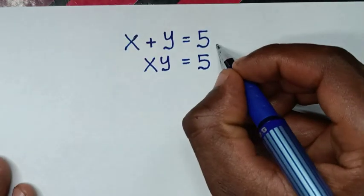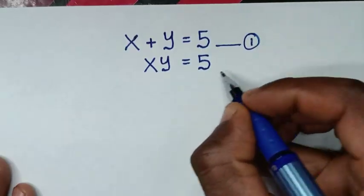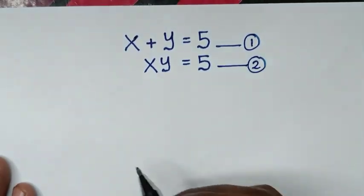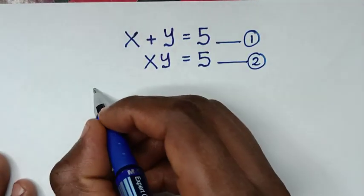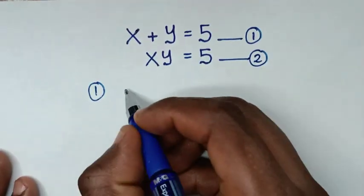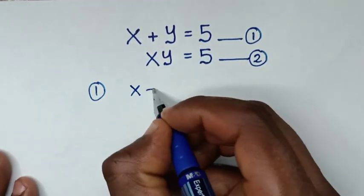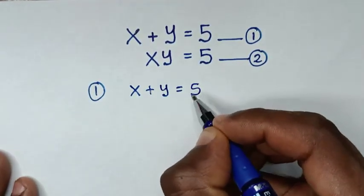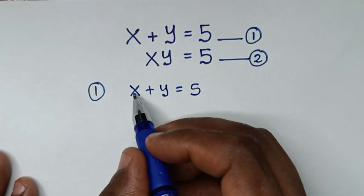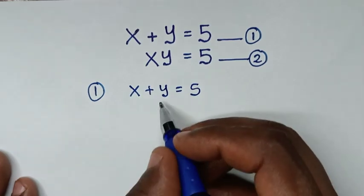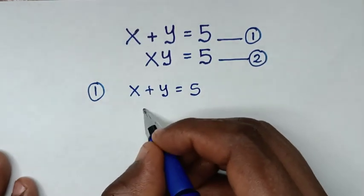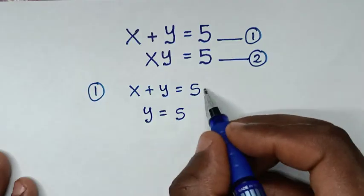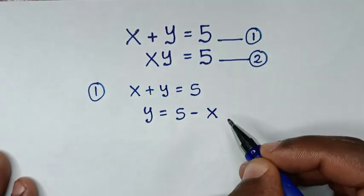In the first step, we'll label x plus y equals 5 as equation 1 and xy equals 5 as equation 2. From equation 1, we take x to the right side, so y is equal to 5 minus x.